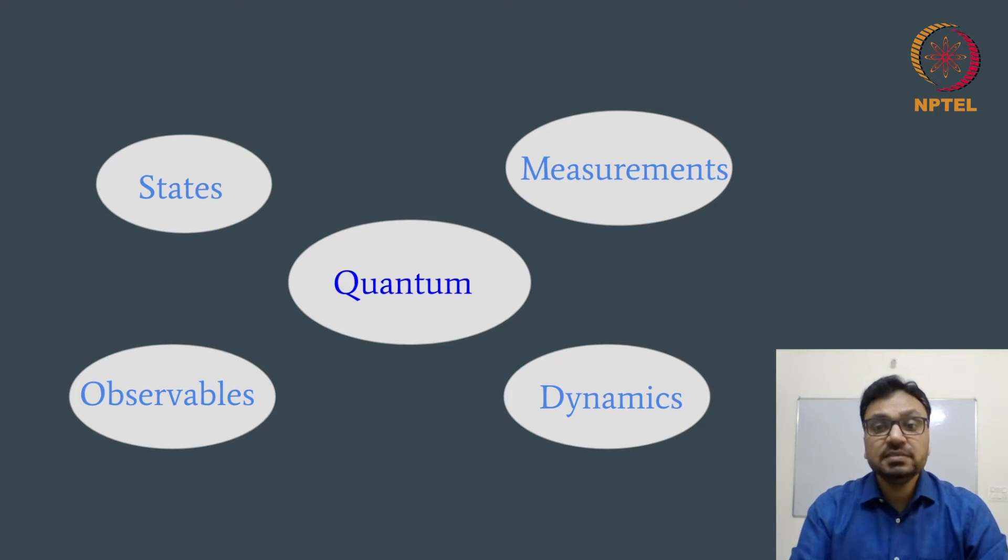Individually, these postulates or axioms lay the mathematical description of what we can call the state of a quantum system, the observables that can be measured for a quantum system, the evolution or transformation of a quantum state, and the effect or properties of quantum measurements. These four postulates define quantum mechanics and yield all the fascinating and mysterious properties of quantum mechanics as we know.